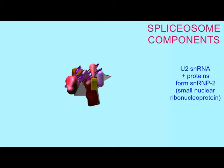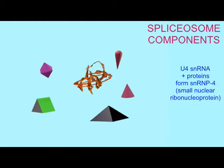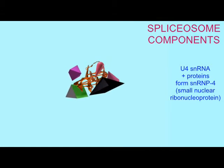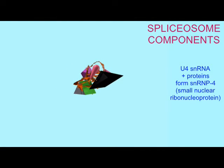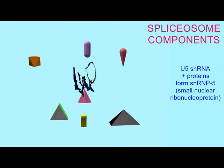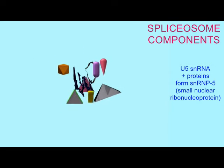So each — U1, U2, U4, U5, and U6 — each forms a small nuclear ribonucleoprotein, or snRNP, with a number of specific proteins. There are more than 100 proteins which form the spliceosome in yeast, and more than 300 human proteins are known to associate with spliceosomes.